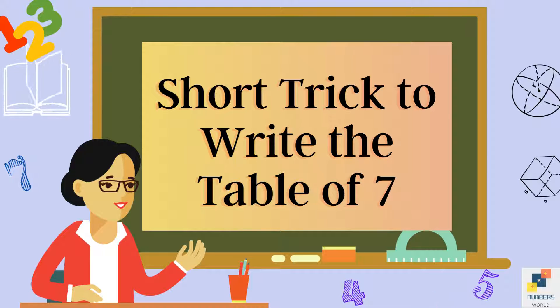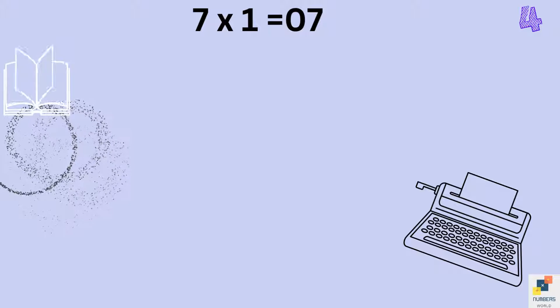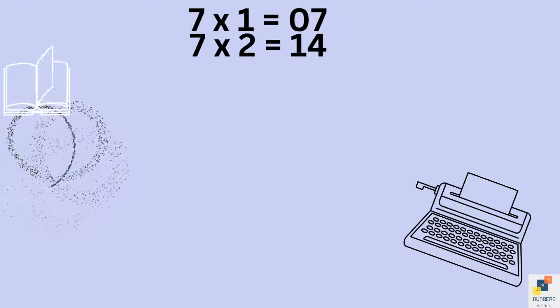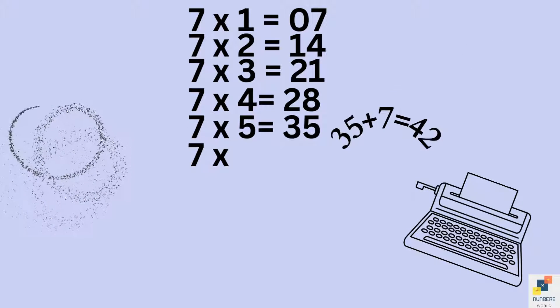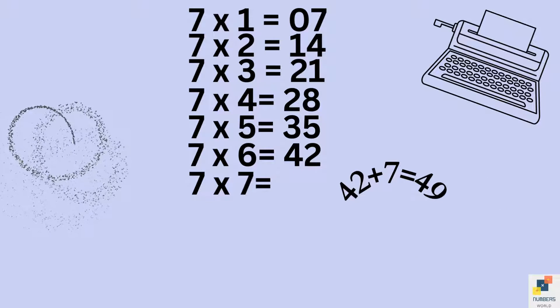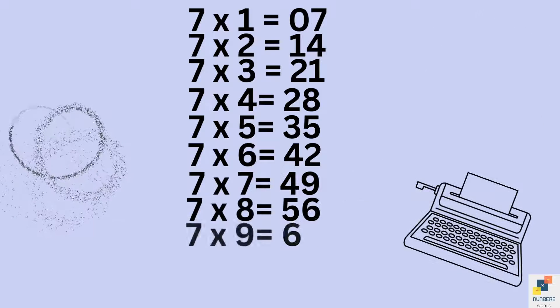Normally when we write the table of 7, how do we do it? 7 ones are 7, 7 twos are 14, and 7 threes are 21, like that. Or otherwise we just keep on adding 7 into our answers. But it's a very long procedure.